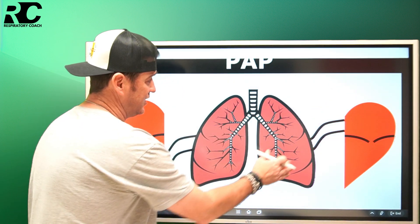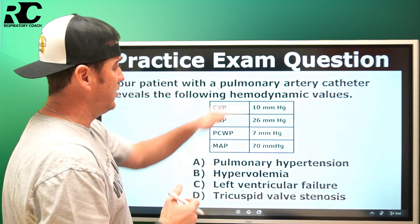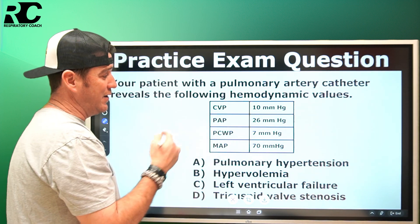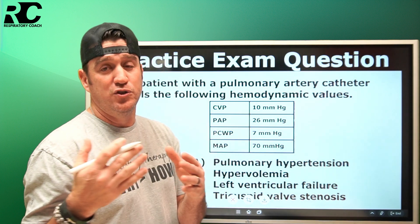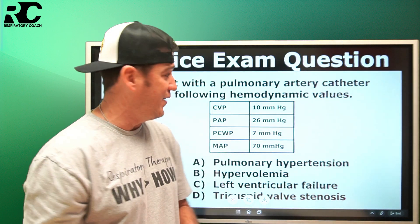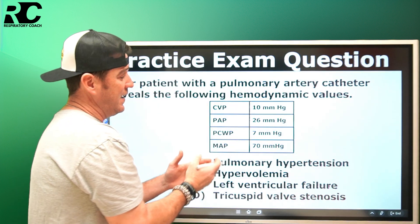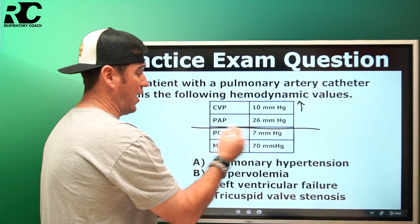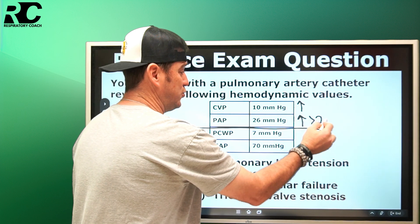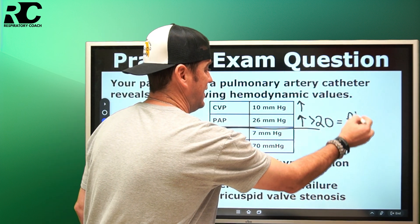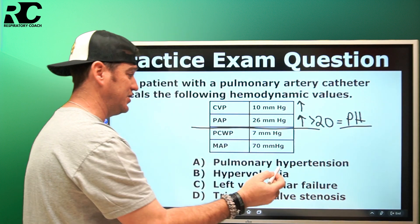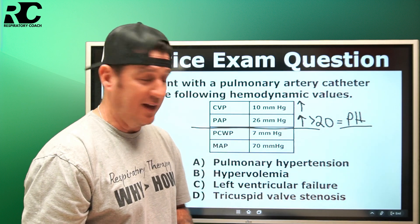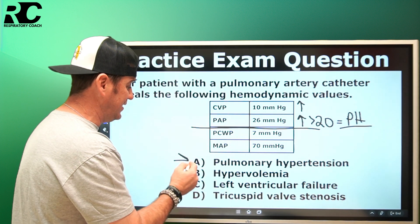Applying this to our exam question: the patient has a pulmonary artery catheter with hemodynamic values. You need to know your normal values. What we see here is that CVP is elevated and PAP is elevated — greater than 20 — which indicates pulmonary hypertension. The PCWP is within normal range and MAP is on the low side of normal.